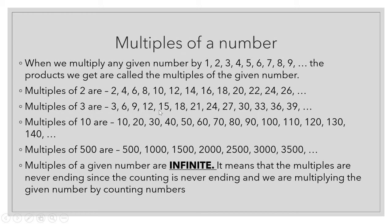All these numbers come in the table of 3: 3×1=3, 3×2=6, 3×3=9, 3×4=12, 3×5=15, 3×6=18, 3×7=21, 3×8=24, 3×9=27, 3×10=30, 3×11=33, 3×12=36, 3×13=39, and so on.